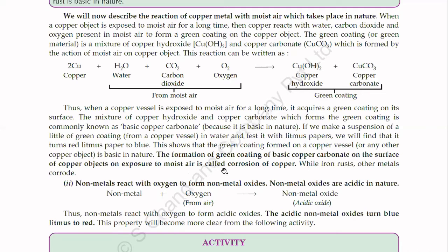While iron rusts, other metals undergo corrosion. Corrosion removes the upper layer of the metal and reduces its thickness. Now we will talk about non-metals. Non-metals react with oxygen to form non-metal oxides, and these are acidic oxides — acidic in nature. This means blue litmus paper will be converted to red.